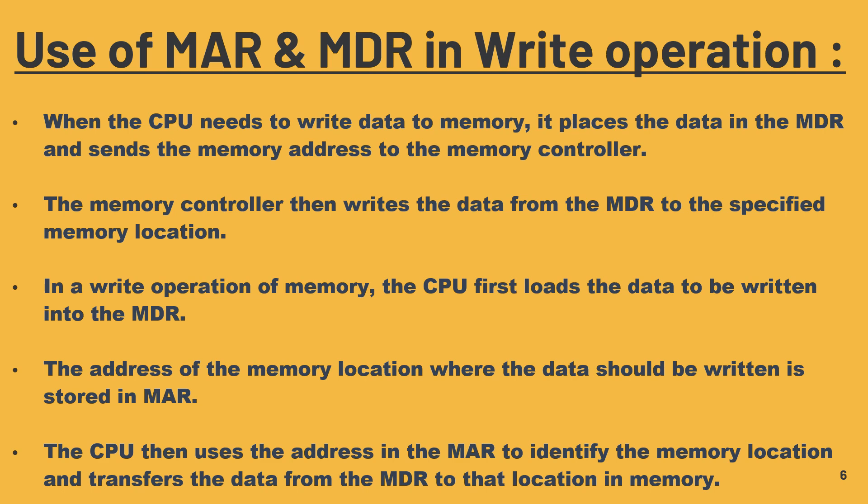Use of MAR and MDR in the write operation: when the CPU needs to write data to memory, it places the data in the MDR and sends the memory address to the memory controller. The memory controller then writes the data from the MDR to the specified memory location. In a write operation, the CPU first loads the data to be written into the MDR. The address of the memory location where the data should be written is stored in the MAR. The CPU then uses the address in the MAR to identify the memory location and transfer the data from the MDR to that location. The CPU sends a write command to the memory controller, which instructs the memory to write the data from the MDR to the memory location specified in the MAR.